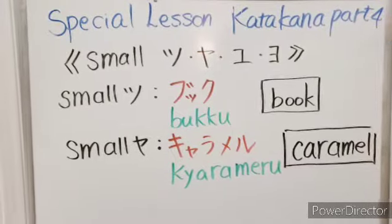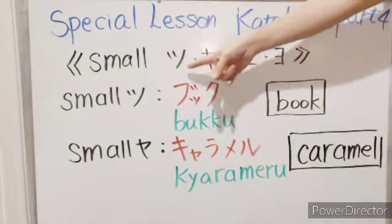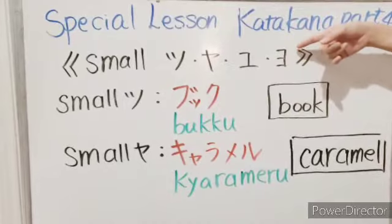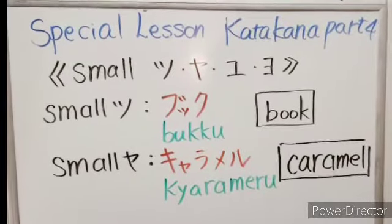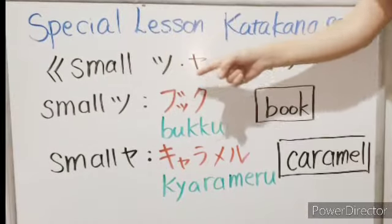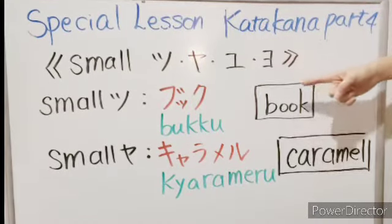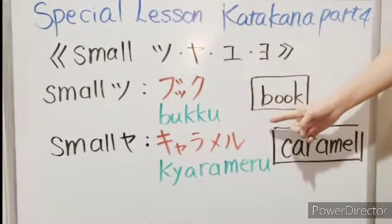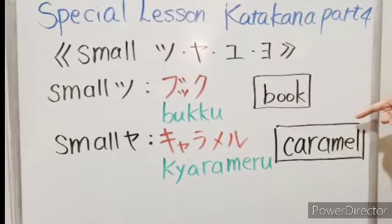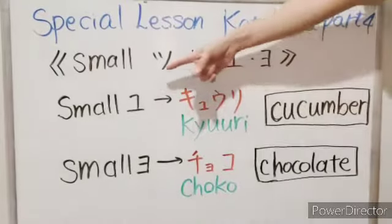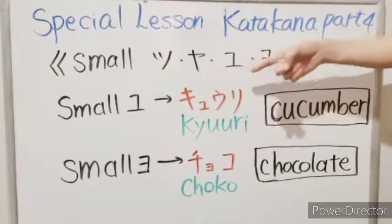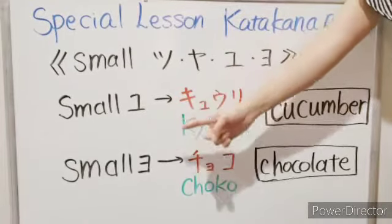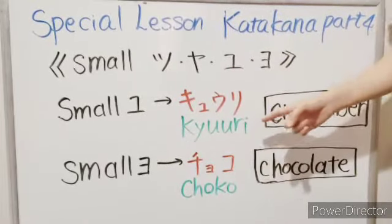Just like with hiragana, we have small tsu, small ya, small yu, and small yo. Let's take a look at some examples: small tsu, small ya — caramel. Small yu — kyuuri (cucumber). Small yu — choko (chocolate).